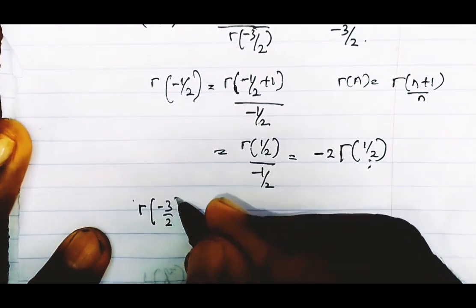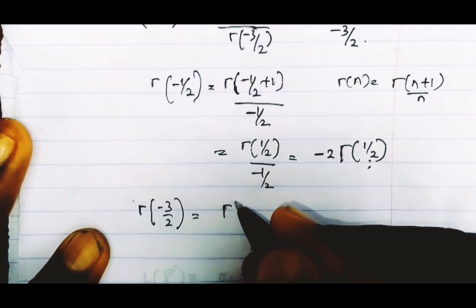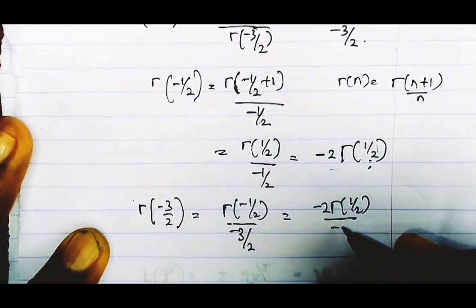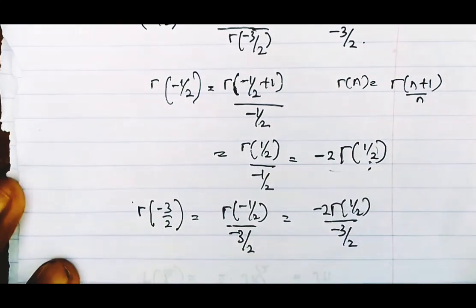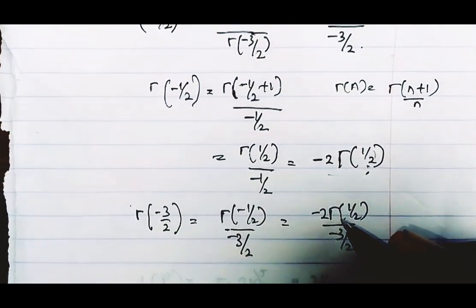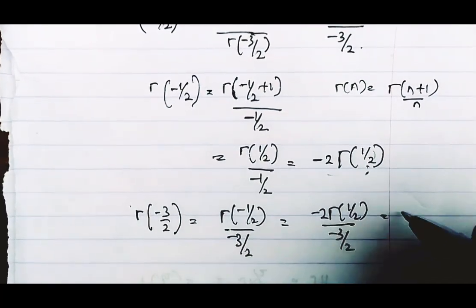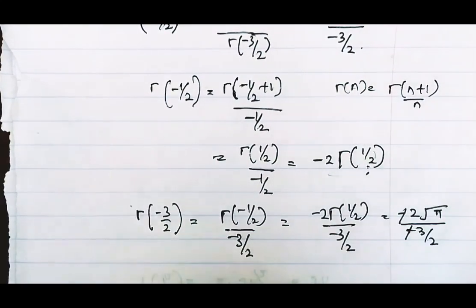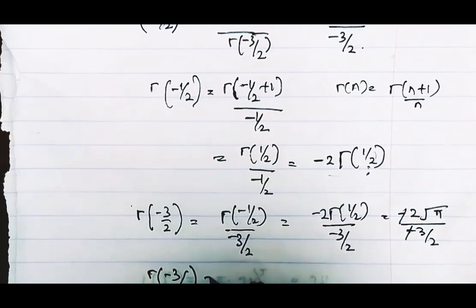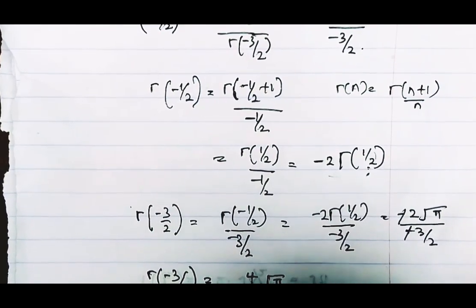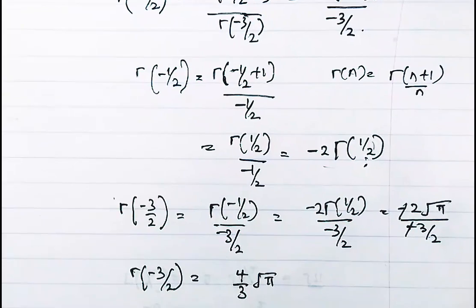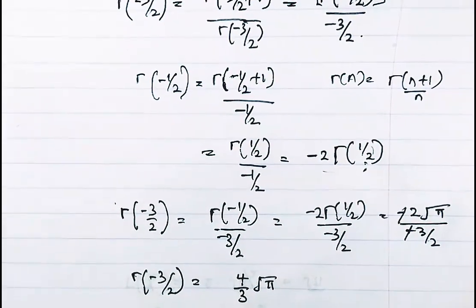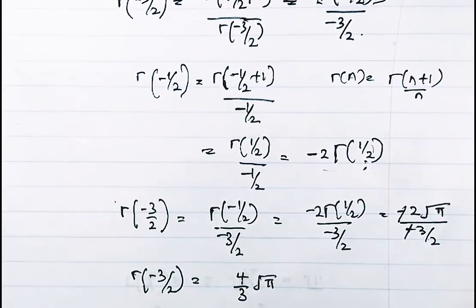Substituting back: gamma of minus three-halves equals gamma of minus one-half divided by minus three-halves, which equals minus two gamma of one-half divided by minus three-halves. Since gamma of one-half is root pi, this becomes minus two root pi over minus three-halves, giving four-thirds root pi. That's all on gamma of negative values. On the next video we begin an entirely new section on beta functions. Thank you for watching, and please subscribe.